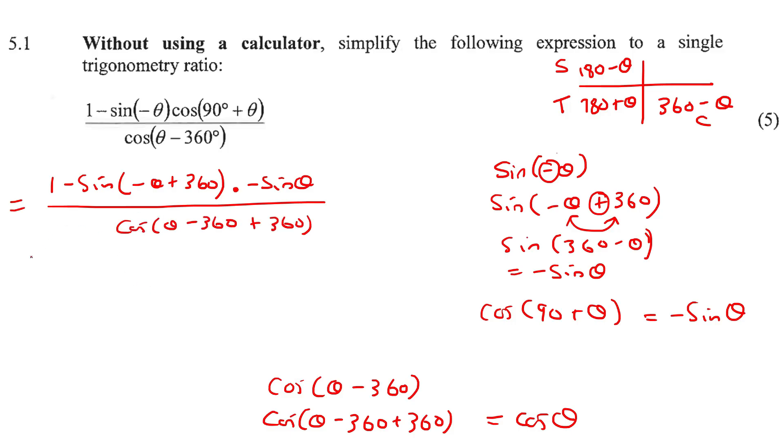Right. Now, what I want you to do, let's just go to the next step. So this will become sin of 360 minus theta. This is going to be multiplied by negative sin theta. And then this just becomes cos theta.